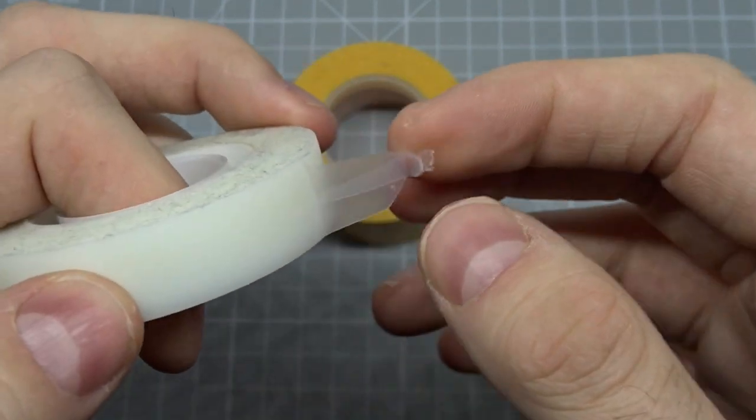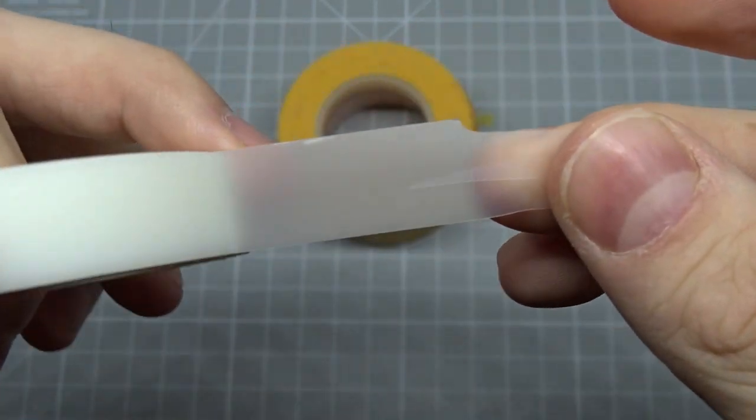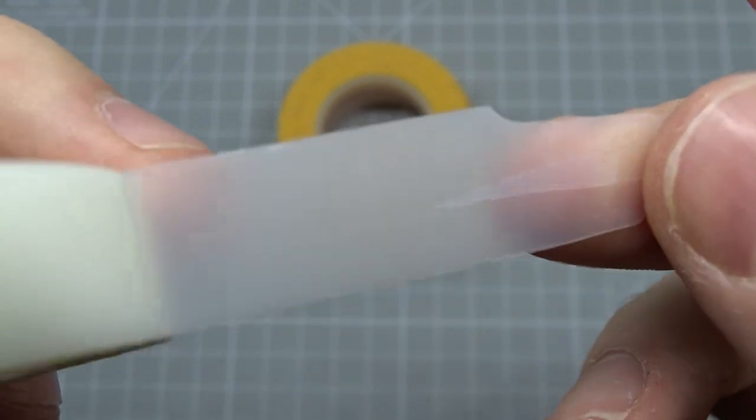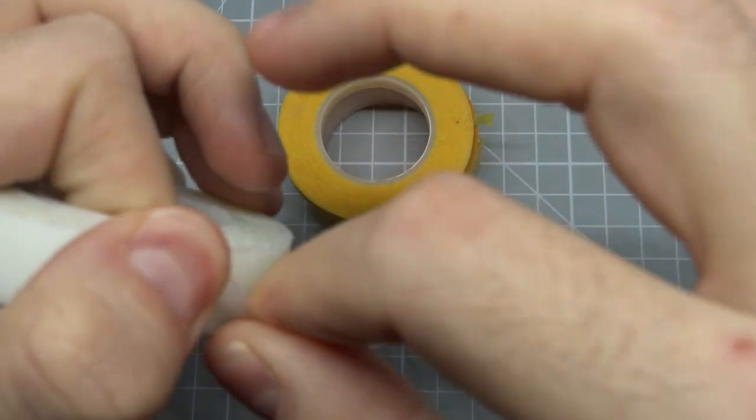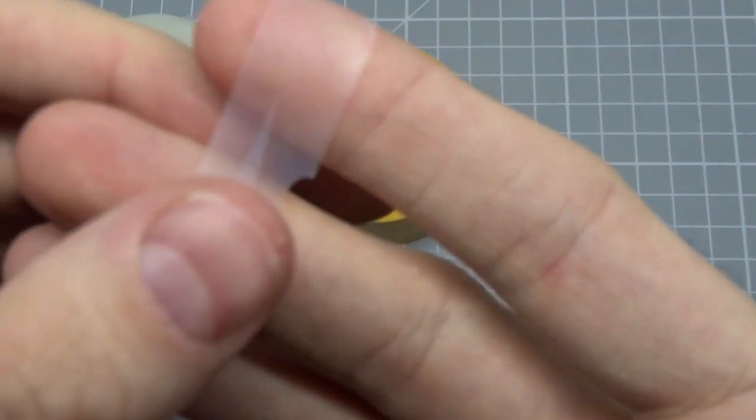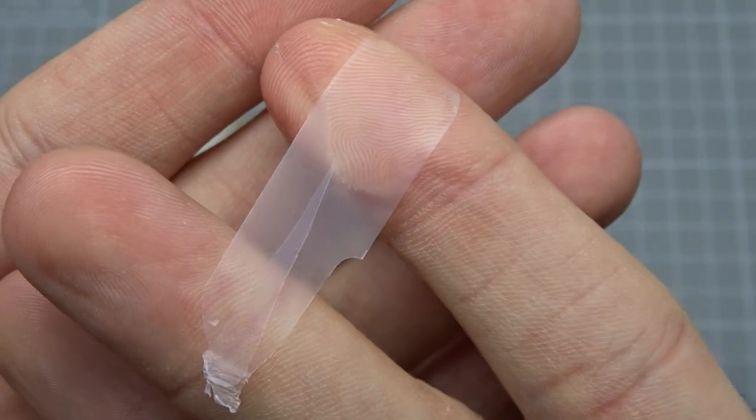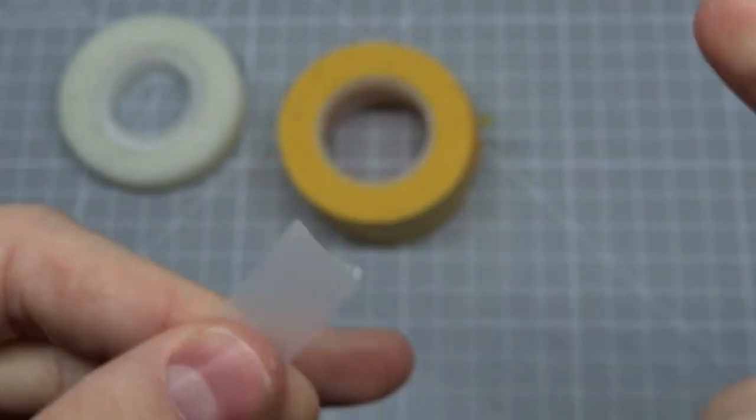Something else I had mixed results with is Scotch Magic Tape. It's transparent and I cut it directly on the canopy like Parafilm. The problem with this is that it's very difficult to remove after you paint over it. So no recommendation from me.